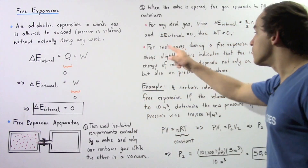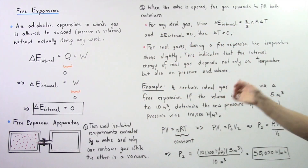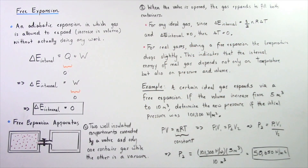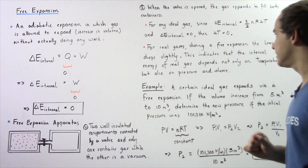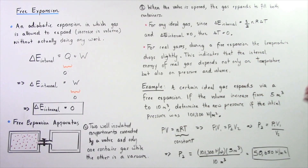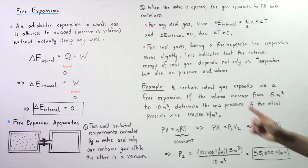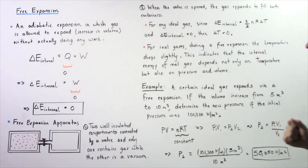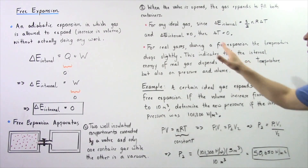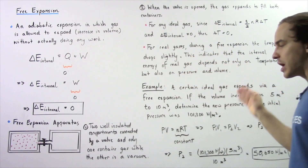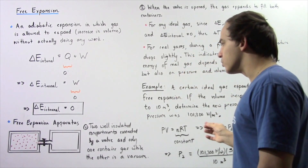However, for real gases during a free expansion, the temperature drops very slightly. This indicates that the internal energy of a real gas, unlike an ideal gas, depends not only on the temperature, but also on the pressure and the volume.